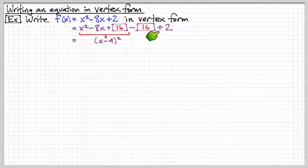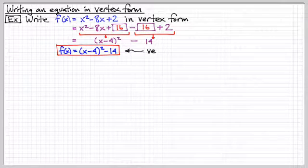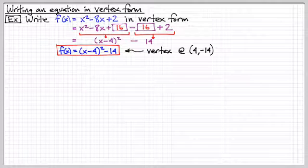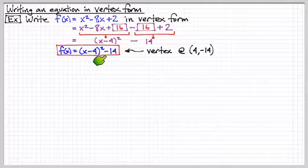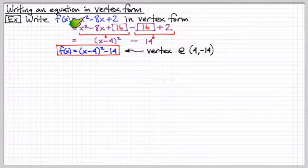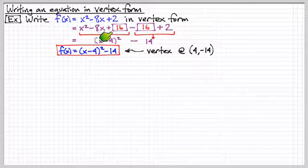x minus four squared. Then negative sixteen plus two is my negative fourteen. So now I have a nice vertex form expression. I could read off instantly that the vertex is at four comma negative fourteen. It's very nice. So we converted from standard form into vertex form by completing the square.